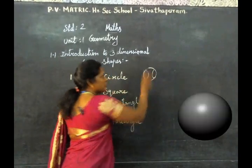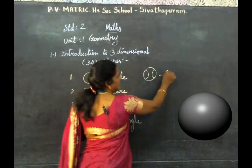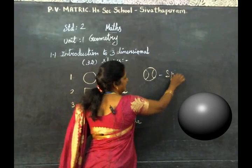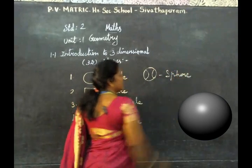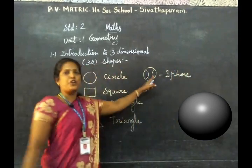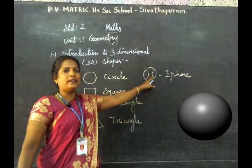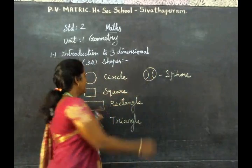Sphere. In a spherical shape, this is a ball — ball is a spherical shape.